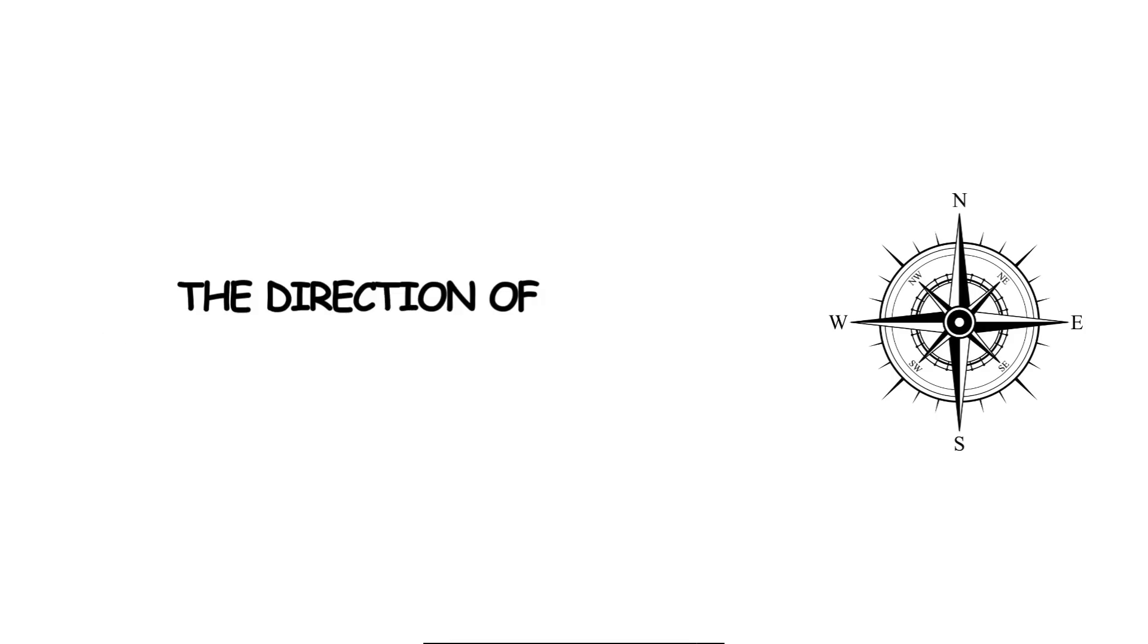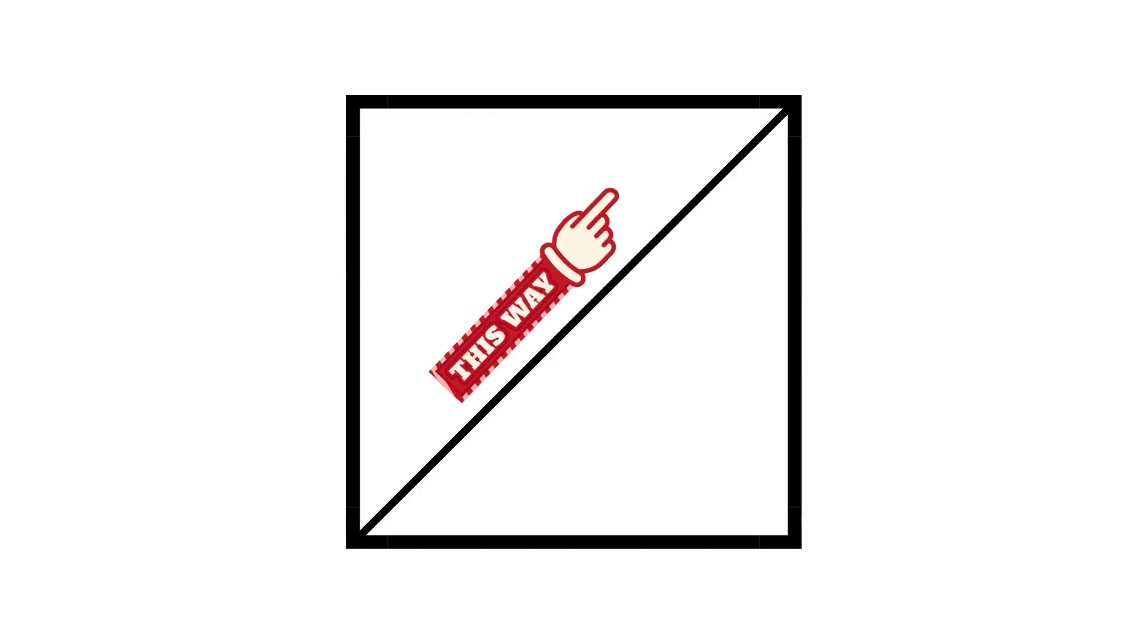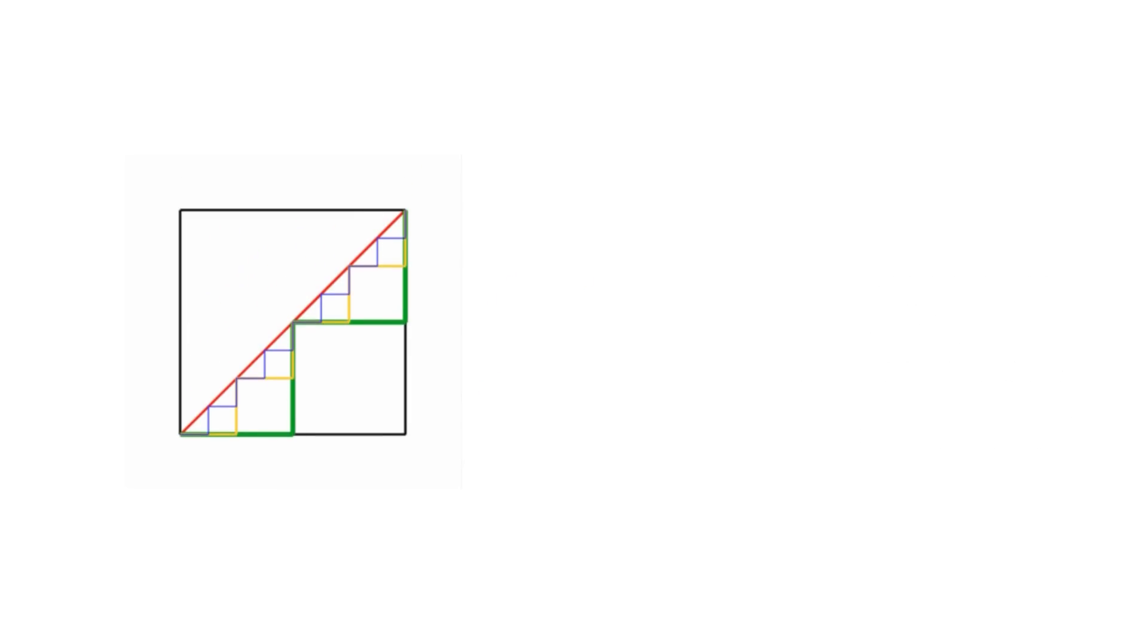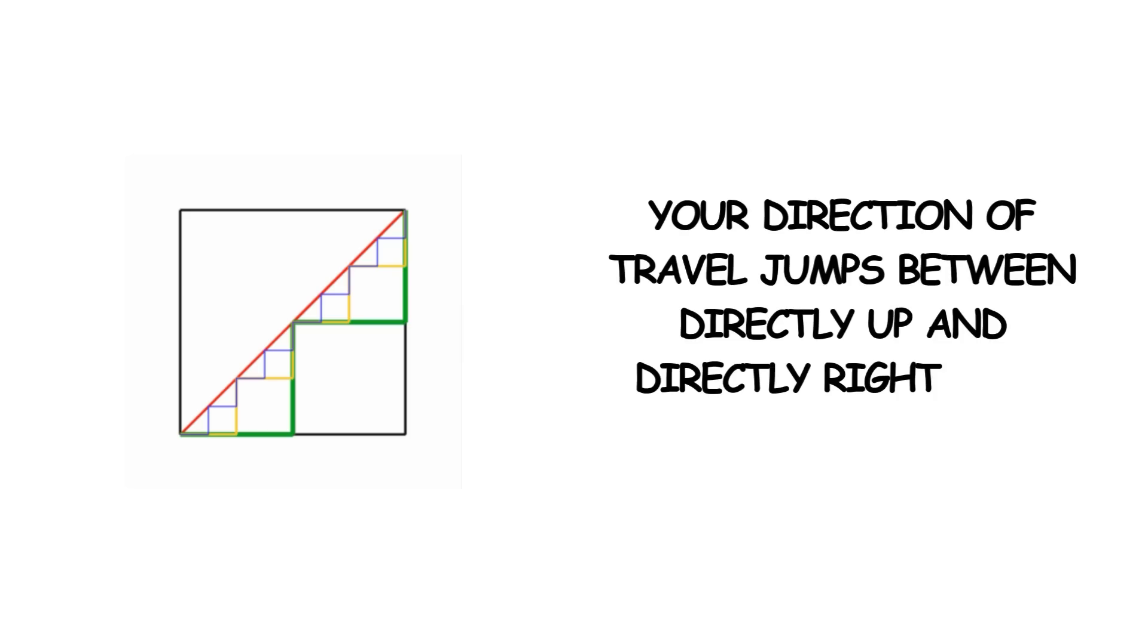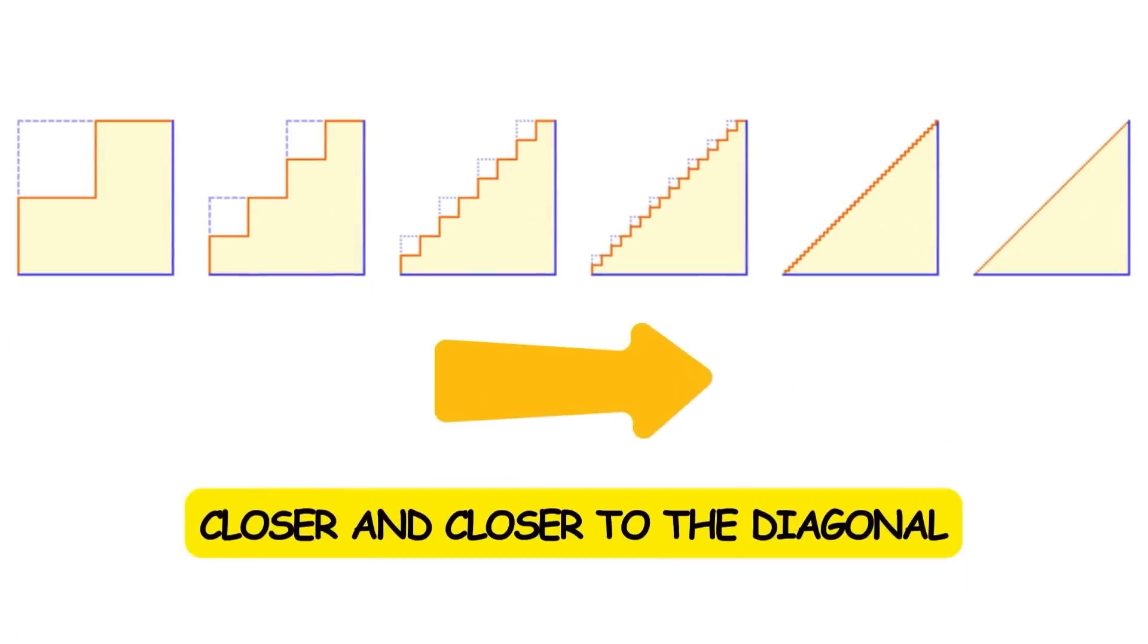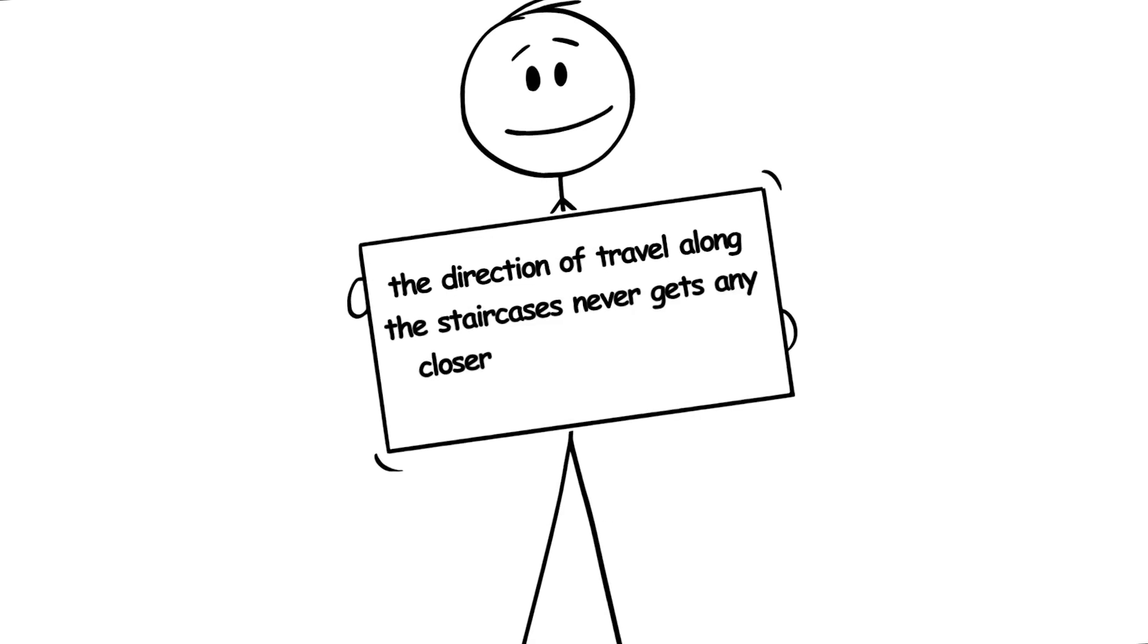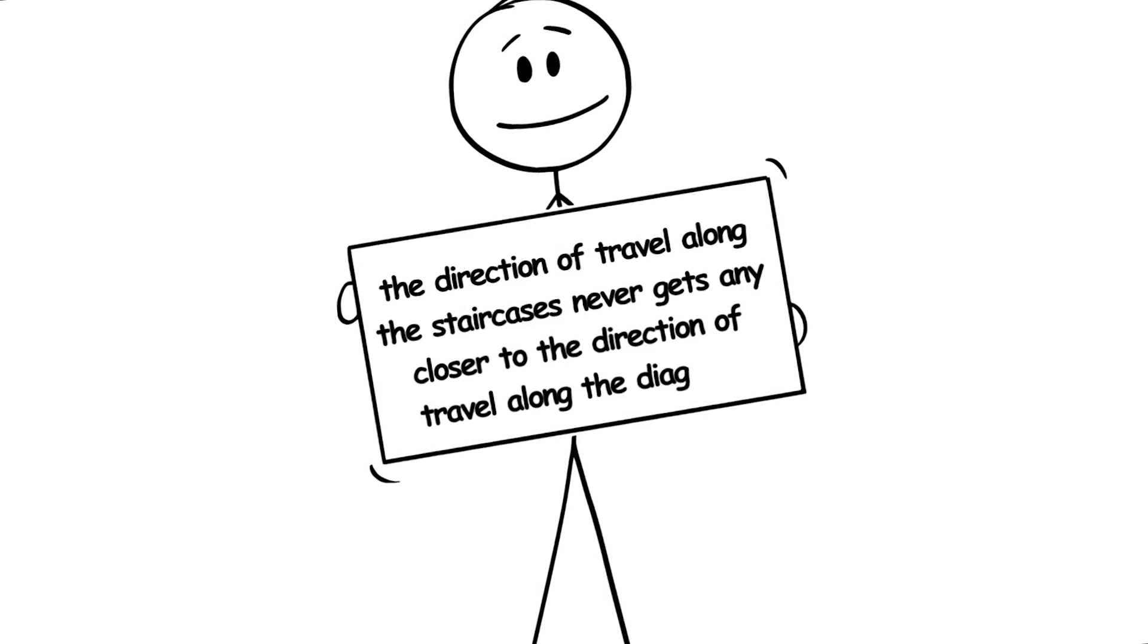The problem is the direction of travel along each curve. If you travel along the actual diagonal, then your direction of travel remains constant. However, if you travel along one of the staircase paths, then your direction of travel jumps between directly up and directly right over and over again. No matter how small the steps on the staircase, even though the staircases get closer and closer to the diagonal, the direction of travel along the staircases never gets any closer to the direction of travel along the diagonal.